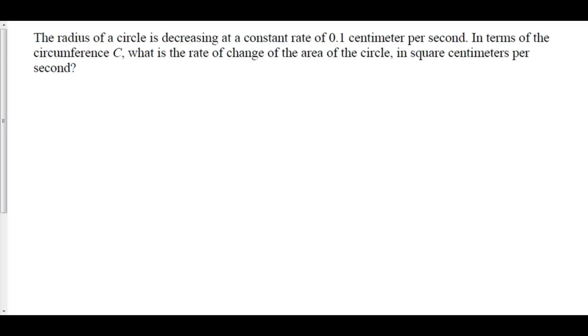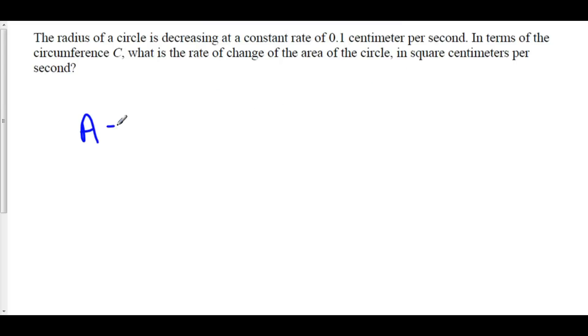The first step to any related rates problem is to create a model for what you have. We want to find the rate of change of the area of a circle. Before we can find the rate of change of the area, we first have to find the area of a circle, which we all know is A = πr².